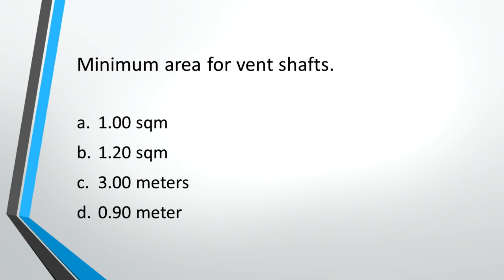Minimum area for vent shafts. A: 1 square meter, B: 1.2 square meter, C: 3 meters, D: 0.9 meter. Answer: A, 1 square meter.